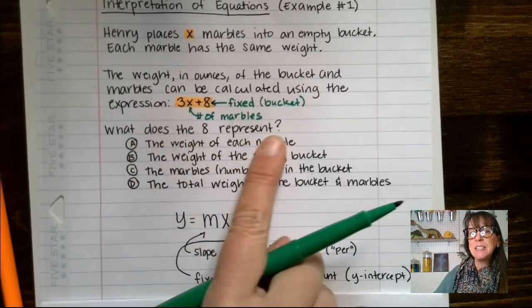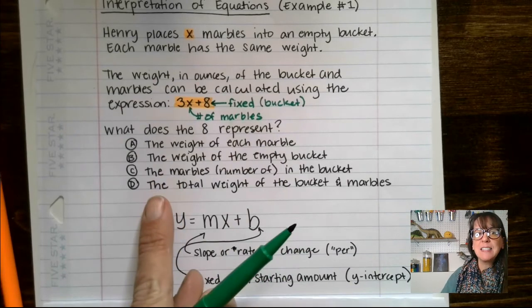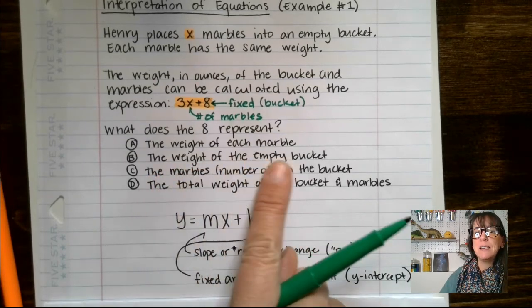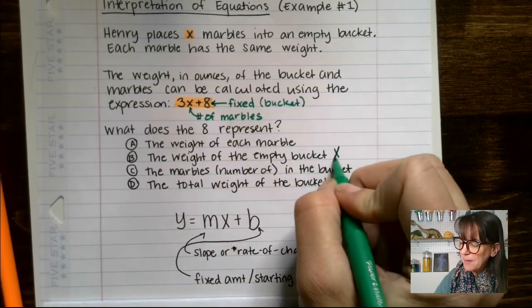So what does that eight represent? That's our fixed amount. So that is going to be the weight of the empty bucket.